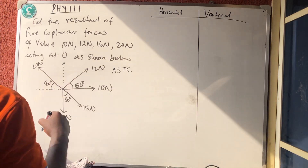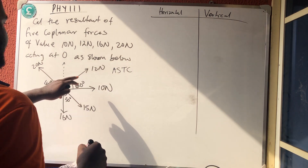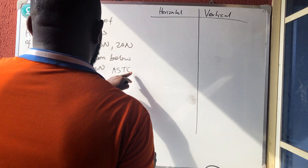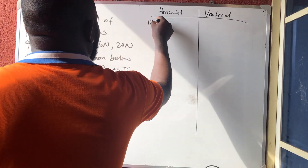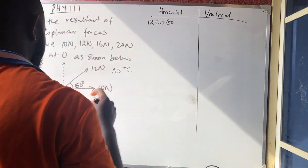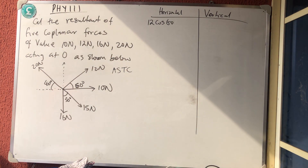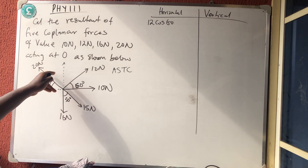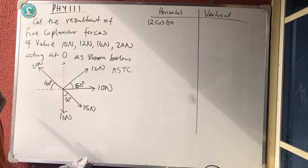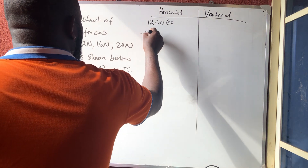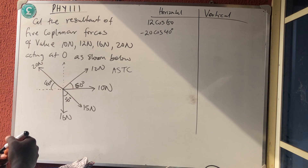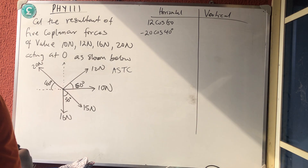The first force is 12 Newtons, directed towards the right, so the horizontal component is 12 cos 60°. The second force is 20 Newtons, directed to the left-hand side, so it becomes minus 20 cos 40°.